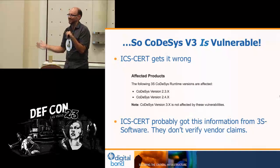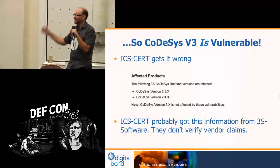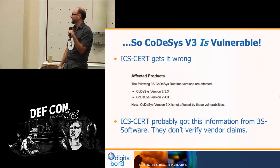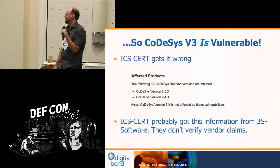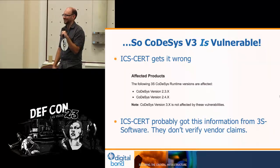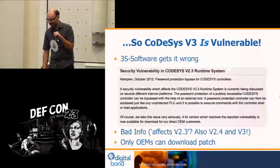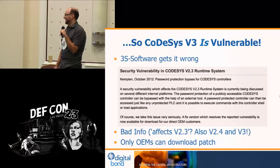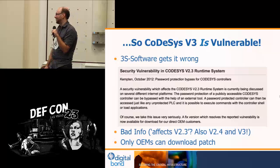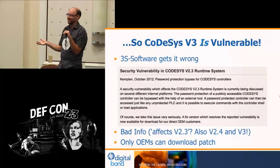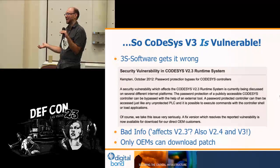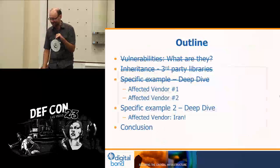CodeAssist version 3 is vulnerable. We wrote some internal exploit tools for it. ICS-CERT's original advisory still officially states that CodeAssist version 3.X is not affected by these vulnerabilities — unfortunately, it is. ICS-CERT probably got their information from 3S Software, and they have a tendency of taking whatever the vendor tells them as gospel rather than what the researcher says. 3S Software also got it wrong in their official advisory — they said version 2.3 was vulnerable, but version 2.4 and version 3 are both vulnerable. If you're an end user, you can't just patch it — you have to go to ABB, Mitsubishi, or whoever made your PLC and have them generate a new firmware, which takes a lot of time.